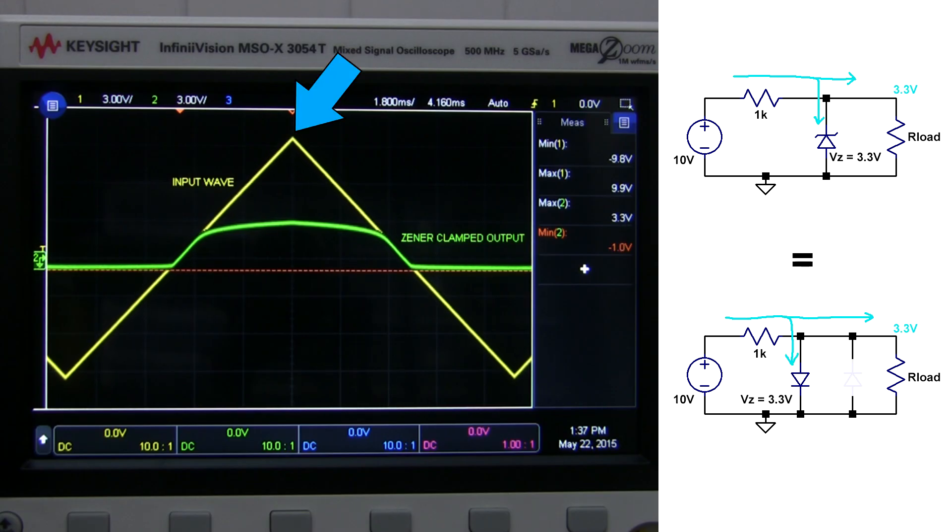Now when the input is above 3.3 volts, we have enough voltage to fully reverse bias the Zener diode. Current flows through the Zener in this direction, and some current also flows to the output. Since the Zener voltage drop is 3.3 volts, the output voltage gets limited to 3.3 volts, and our voltage-sensitive circuit is saved.